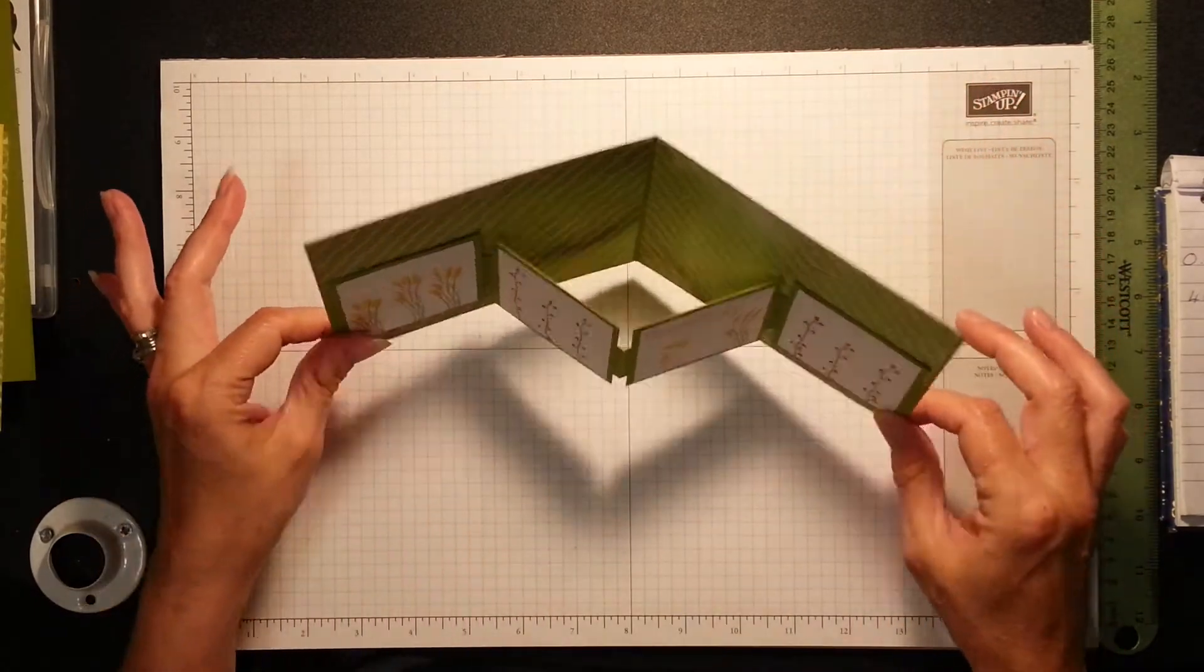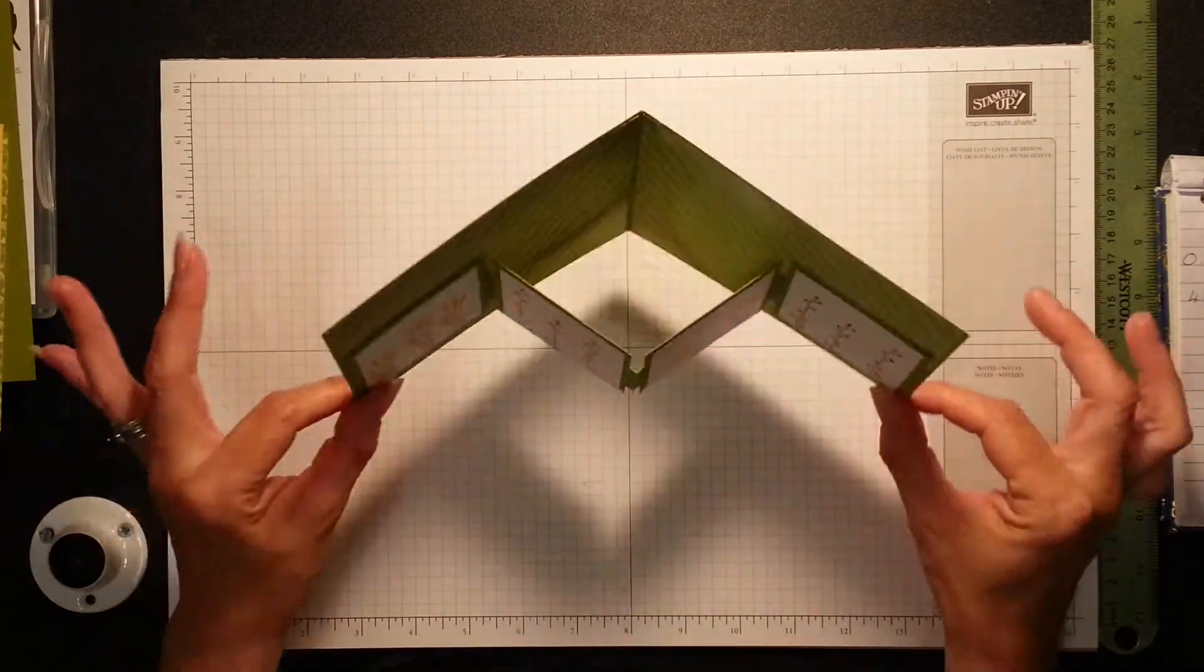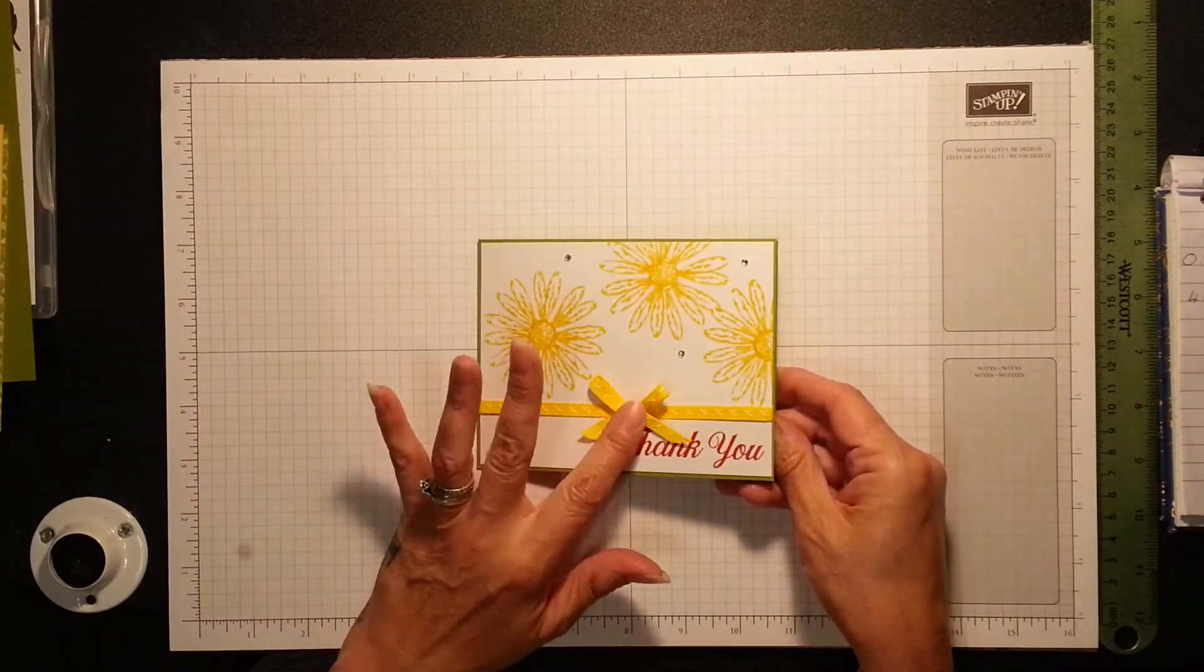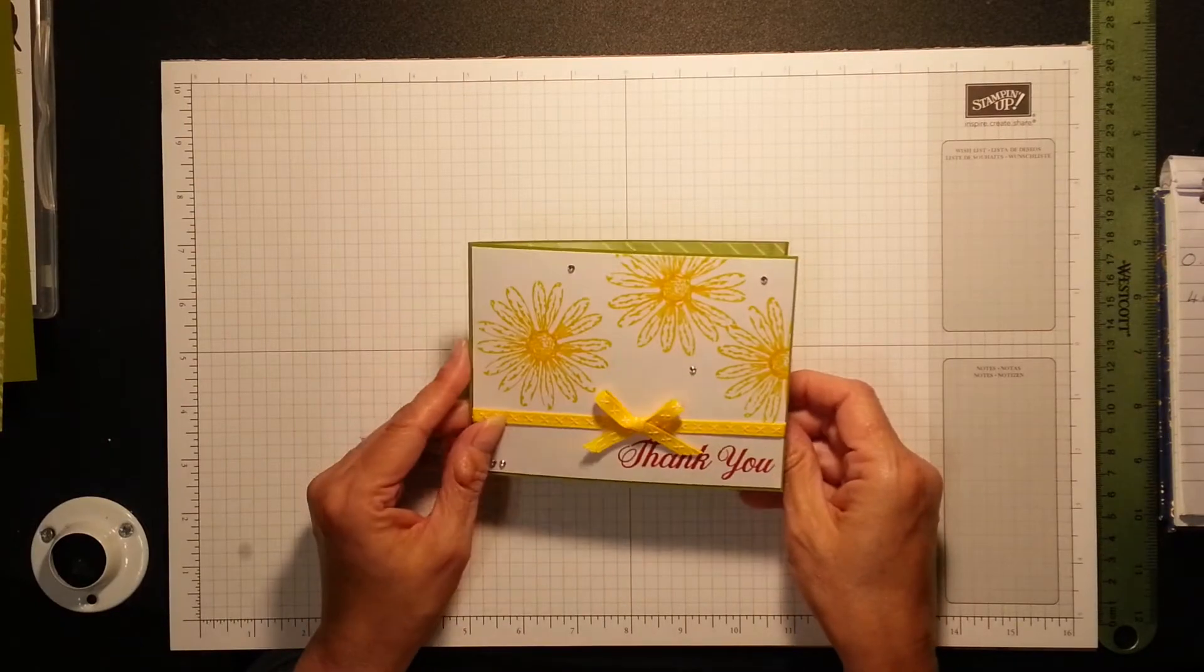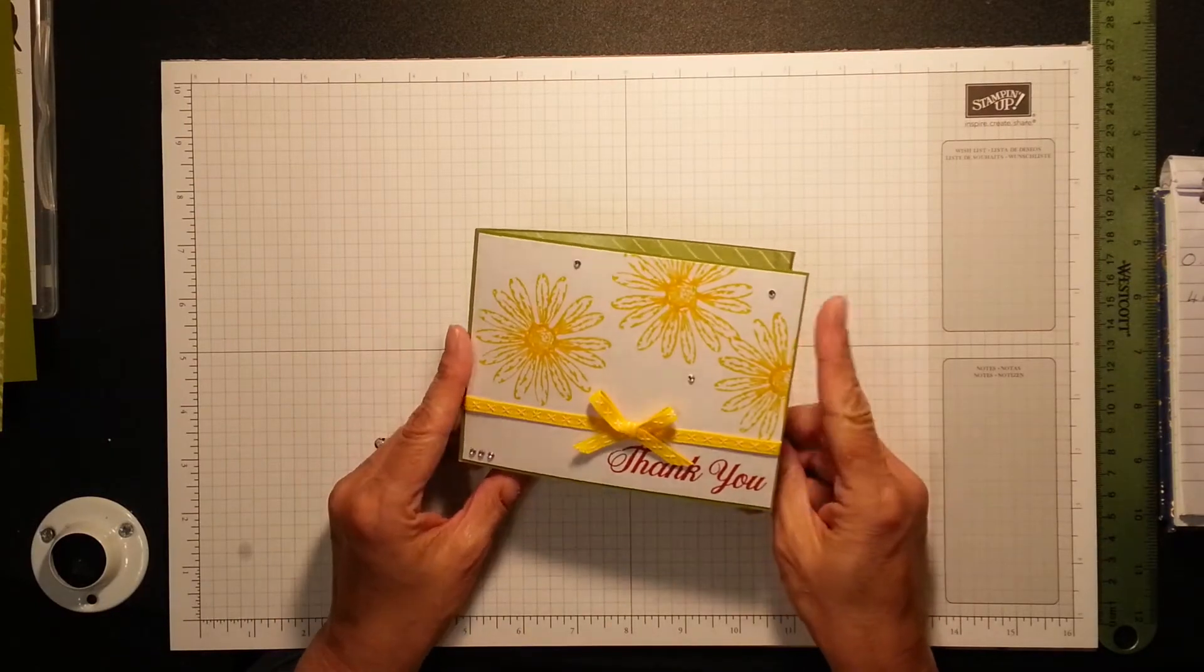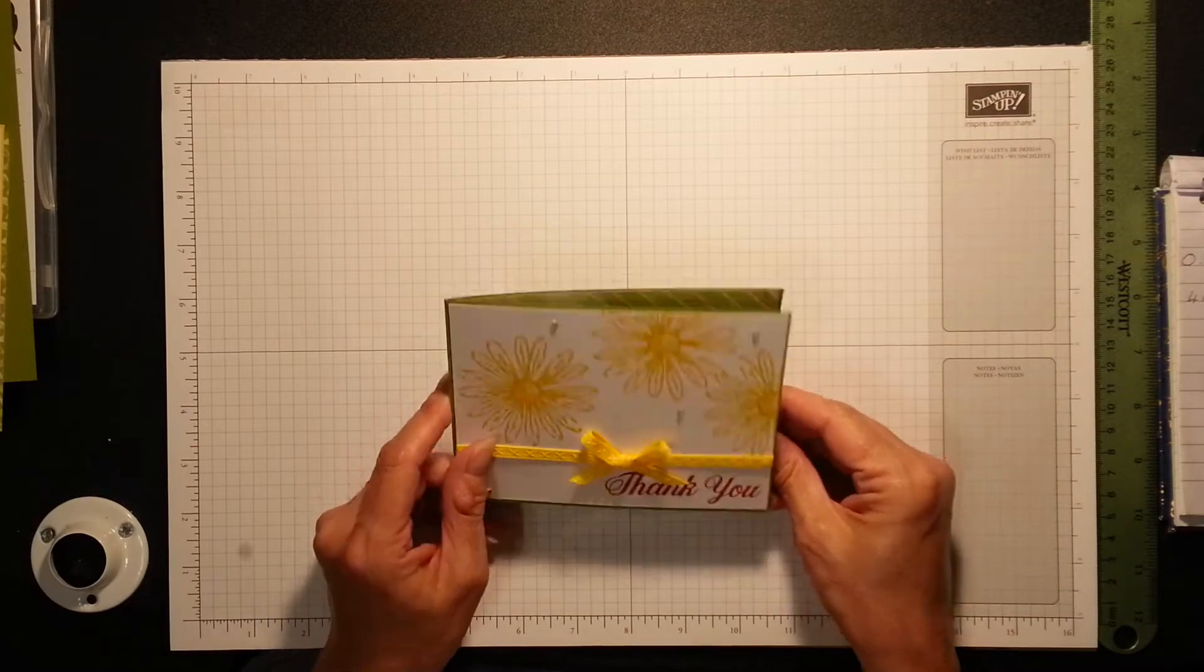So when your card opens it looks like this, isn't that cute? And I love the front, I'm loving this Daffodil Delight color, it's beautiful. So I'm doing the same card but I've added a few extra layers to this one.